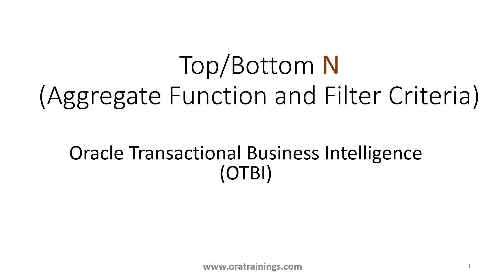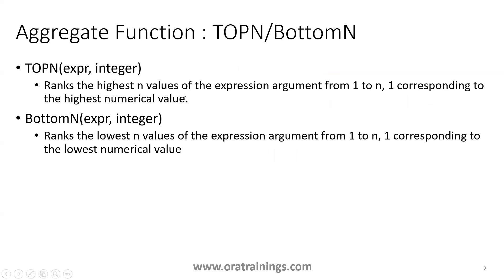Welcome to orotrainnews.com. In this session we'll discuss TopN and BottomN aggregate functions as well as filter criteria in OTBI. TopN is an aggregate function which requires two input parameters: one is the expression, which I can call a column value in your OTBI analysis, and the other one is an integer — how many top values you want.